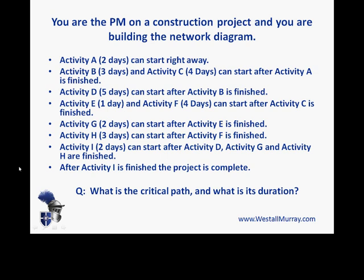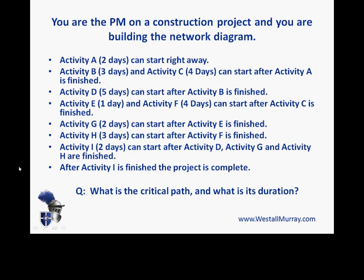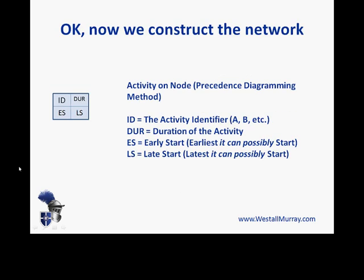The question at the bottom is a two-part question: what is the critical path, and what is its duration? To answer that, we have to construct the network. Here's an example of the boxes we'll be using for the activities. By looking at the question, you would have been able to see that this is an activity-on-node network, so we'll use the precedence diagramming method. You can spot that because the activities are listed simply by one letter — not described as Activity A to B, Activity B to C, and so on. The boxes will have the ID in the top left, the duration in the top right — both coming straight out of the question.